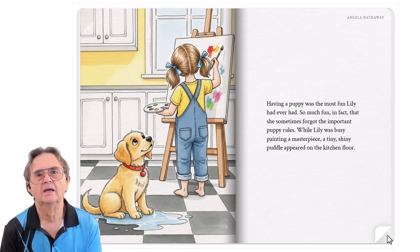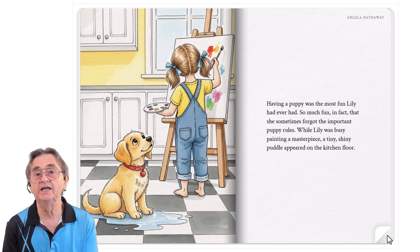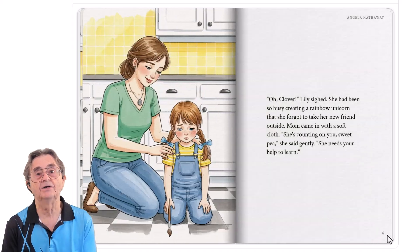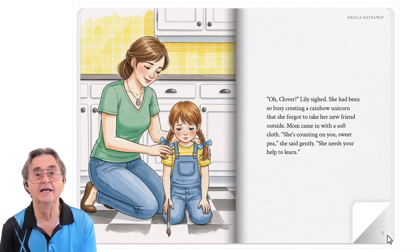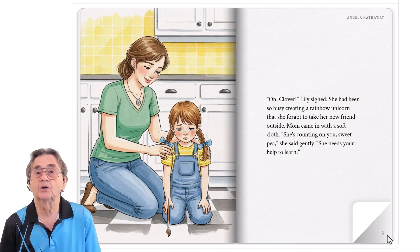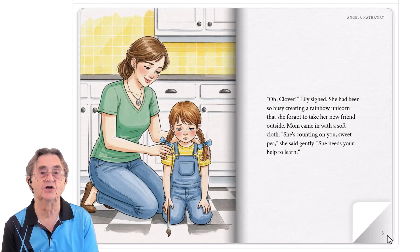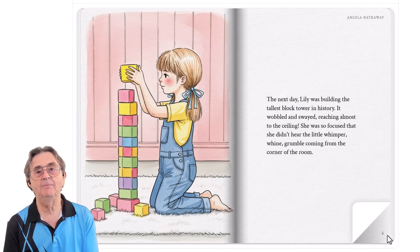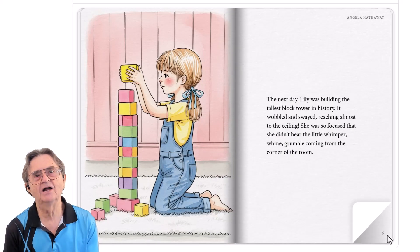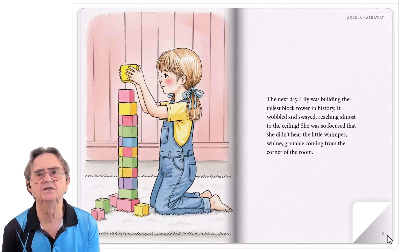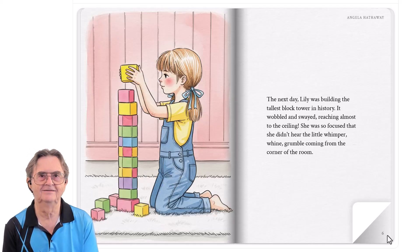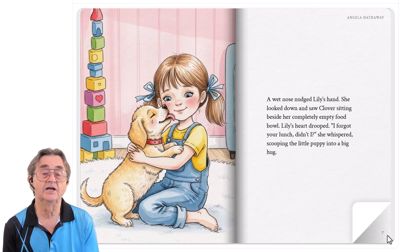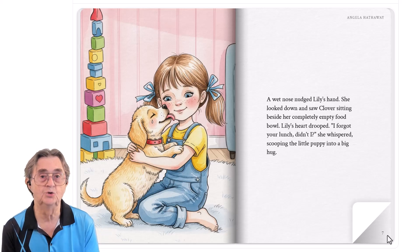Pages three to four: my 'keeps forgetting routines' prompt created Clover's confused expression. AI interpreted 'responsible' as needing structure, not just willpower. Pages five to six, the Happy Day Chart Solution, came from my theme of responsibility while still having fun. AI took these abstract concepts and created a concrete, kid-friendly tool.